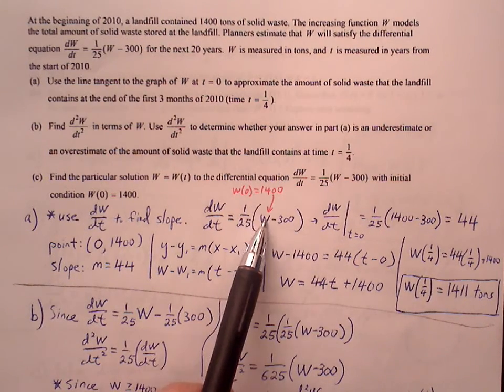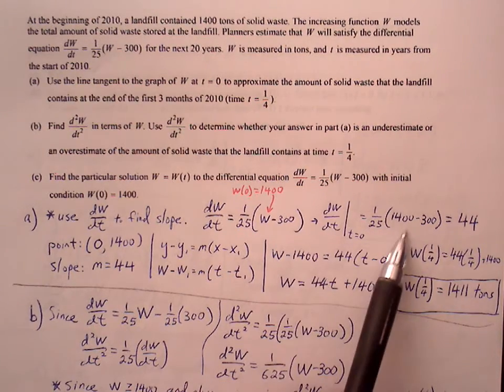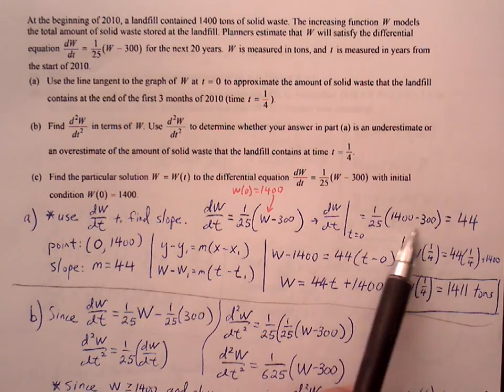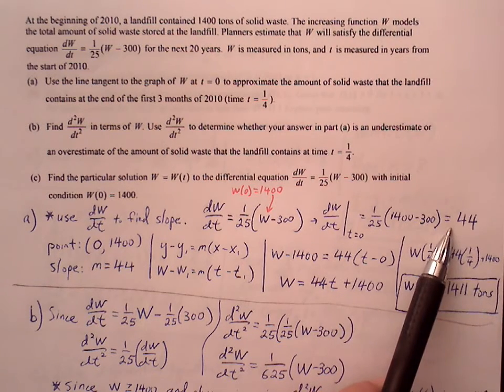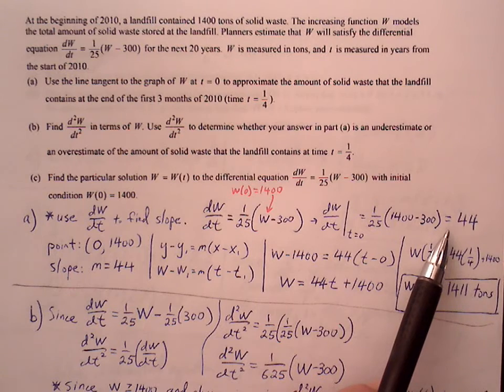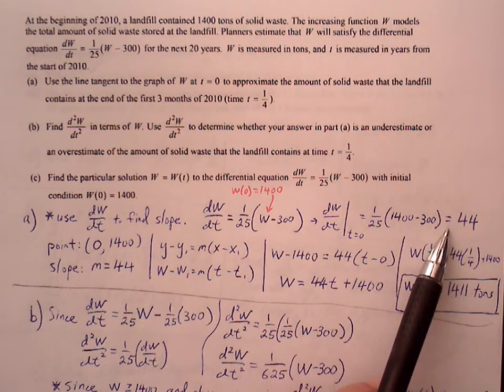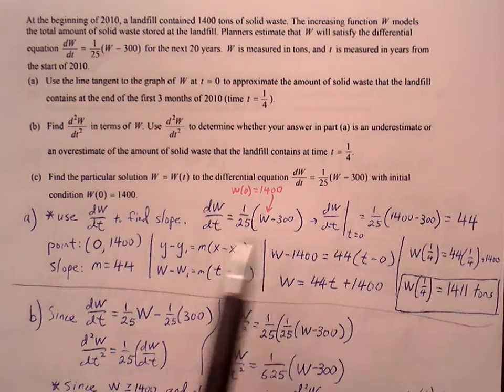We clean this up, 1400 minus 300. Multiply, subtract, divide by 25 and we get 44 tons. And the rate of change at t equals zero, the rate of change of the waste is increasing at 44 tons per year. So that's our slope.